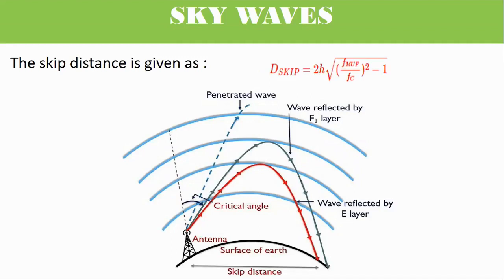Where Skip is the skip distance, H is the altitude at which the reflection occurs, Fmuh is the maximum usable frequency, and Fc is the critical frequency in hertz.